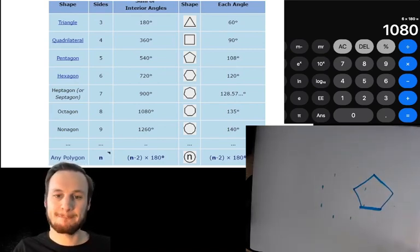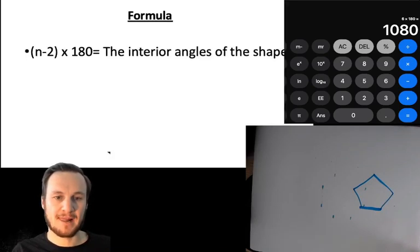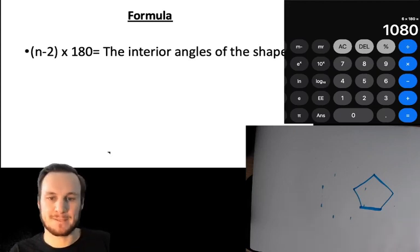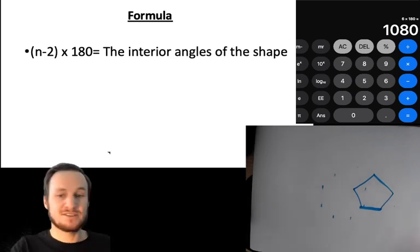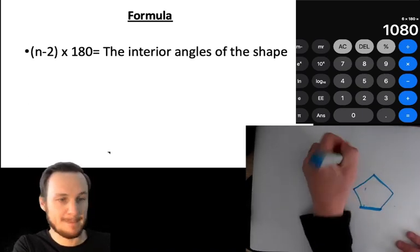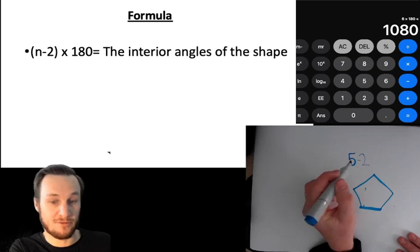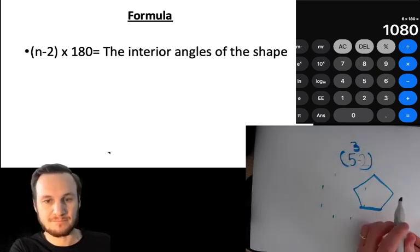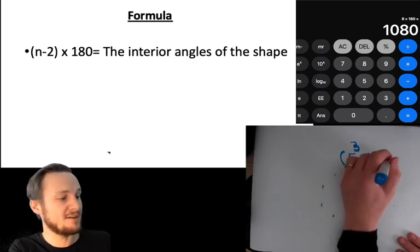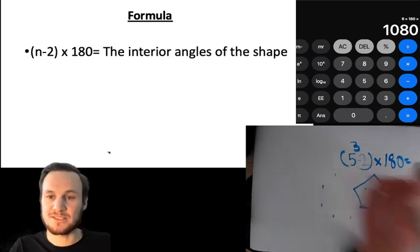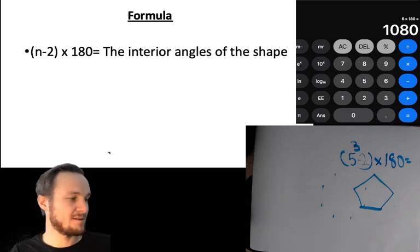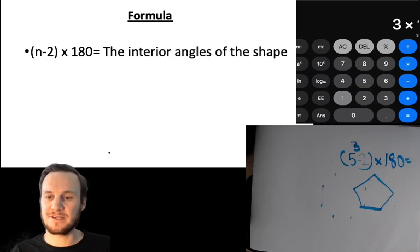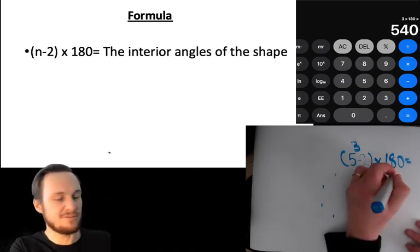Remember the rule is that the interior angle, sorry, the n equals sides. Just remember that n equals sides. So the amount of sides that it has, so it has five. Take away two equals what? Three, right. And you get a calculator. You're allowed to use calculators for this. Times by 180 equals, well let's type it in. Let's see if it works. Three times 180 equals 540 degrees.